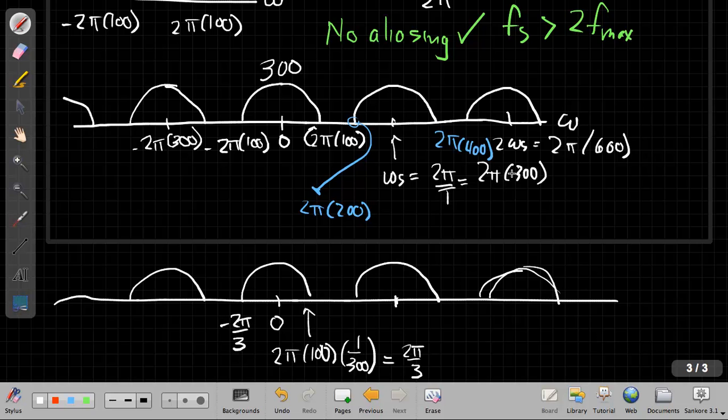And this point here will be 2 pi times 300 times T is 1 over 300 will be at 2 pi, which is exactly what we want to see, because we know discrete time spectra repeat every 2 pi. Because the time index has to be an integer. We've seen already that the spectrum has to repeat every 2 pi.